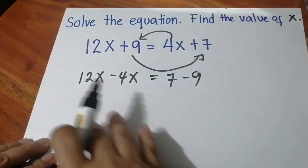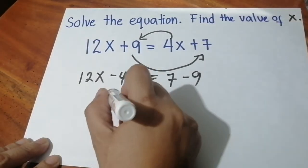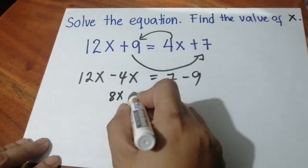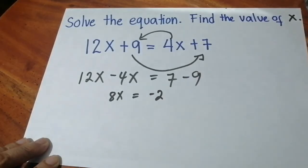After that, we are ready to combine like terms. 12 minus 4 will be 8x, and 7 minus 9 will be negative 2.